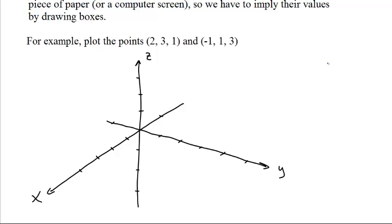Anyway, so we want to plot the points (2, 3, 1). Now, that is 2 on the x-axis, so we want to be 2 on the x-axis, which means we want to have our x-value. We want 3 on the y-axis, so here's 3: 1, 2, 3.